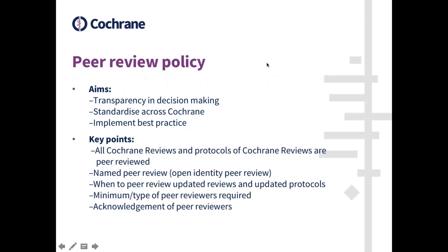The peer review policy itself has three main aims. The first is transparency in decision making — it's very much an ethos of Cochrane that we're a transparent organisation, both within and external to the main Cochrane community. The second aim is to standardise the peer review processes currently in use across Cochrane. Until now, there were over 50 different ways to run a peer review process within Cochrane. The third point is to implement best practice.